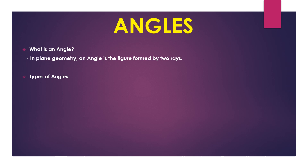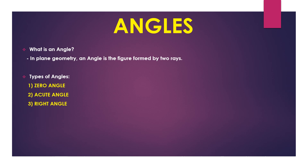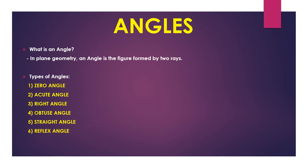What are the types of angles? First, zero angle. Second, acute angle. Third, right angle. Fourth, obtuse angle. Fifth, straight angle. Sixth, reflex angle. Seventh, complete angle or full angle.